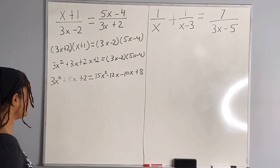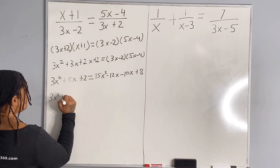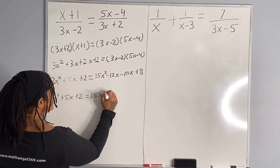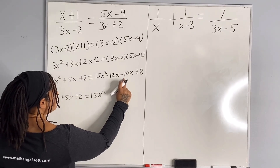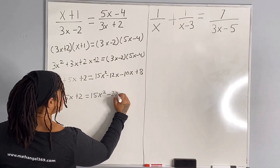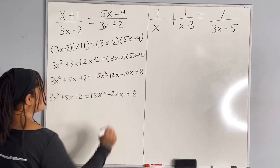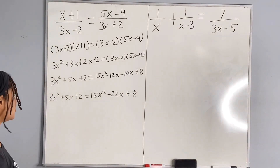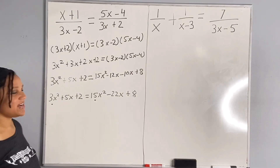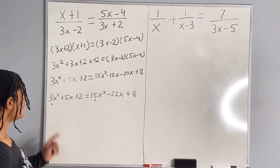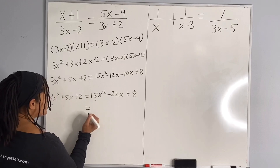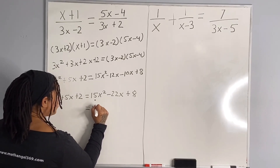I am going to go ahead and finish simplifying. We have 3x squared plus 5x plus 2 is equal to 15x squared. Negative 12 minus 10 is 22, so we have minus 22x plus 8. Now we are going to combine like terms. We have 3 and 15 attached to x squared, so I am going to bring the 3 over. 15 minus 3 is 12, so we have 12x squared.